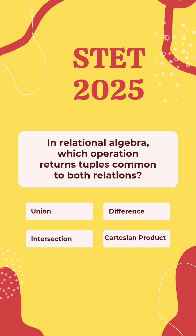In relational algebra, which operation returns tuples common to both relations? Options: Union, Difference, Intersection, or Cartesian Product.